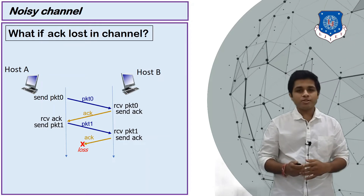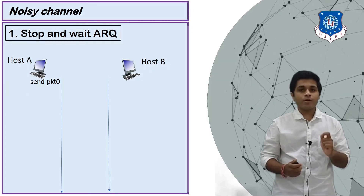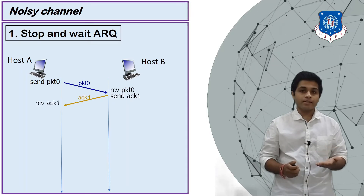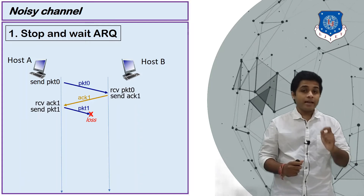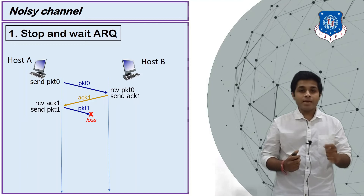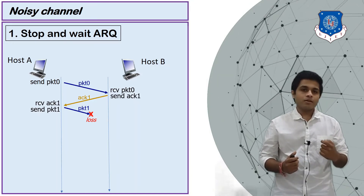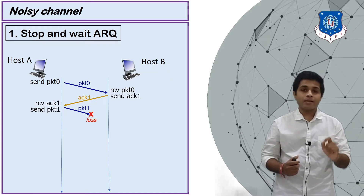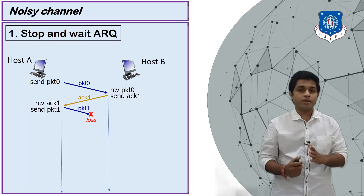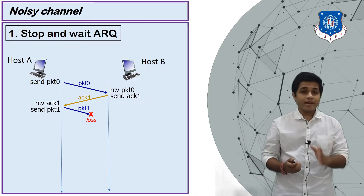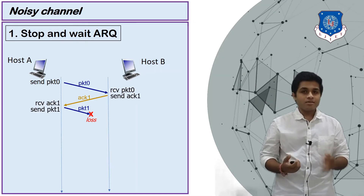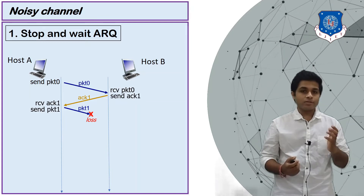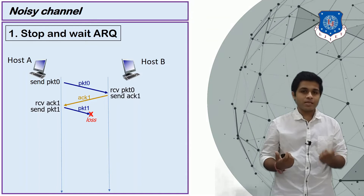This problem is solved in stop-and-wait ARQ, where ARQ stands for Automatic Repeat Request. A sends packet 0, B receives it and sends ACK 1. From ACK 1, A knows packet 0 was received successfully and B is expecting packet 1. Remember: the acknowledgement number is always one greater than the sequence number of the packet, so for packet 0 the acknowledgement is ACK 1. But suppose packet 1 is lost — B waits for packet 1 and A waits for ACK 2, with neither knowing the packet is lost.